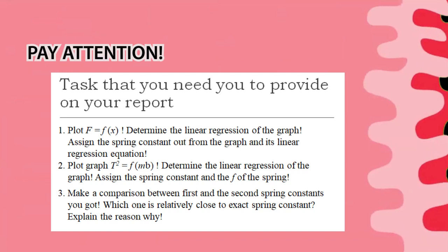There are three things you need to provide in your report. First, plot the curve of force as a function of delta x — provide the graph showing the relationship between force and the position of the needle when you add the mass, then determine the linear regression of that graph. Second, graph the square of the period as a function of mass. Third, compare the first and second spring constants you obtained — state the exact values, explain which one is closer to the exact value, and explain why one method is better than the other.